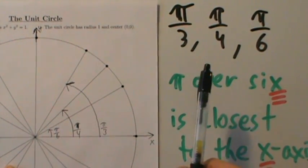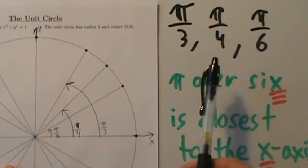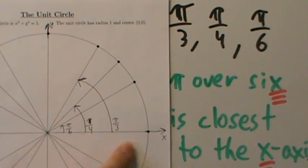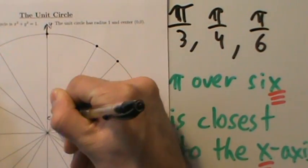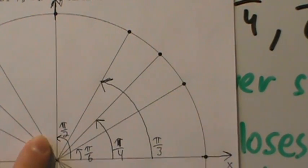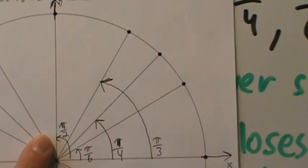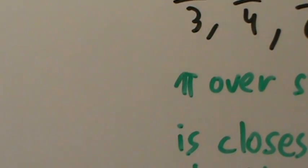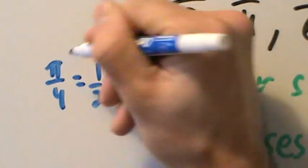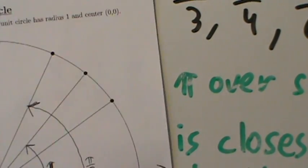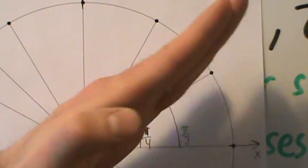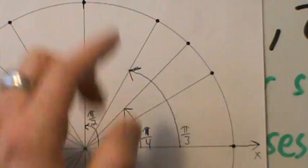If you don't like that, just remember that pi over 2 radians is 90 degrees, which puts you right up here. Pi over 4 is one half of pi over 2. So if pi over 2 is the 90 degree angle, half of that cuts the quadrant in half — that's pi over 4. It puts you right in the middle of the first quadrant.